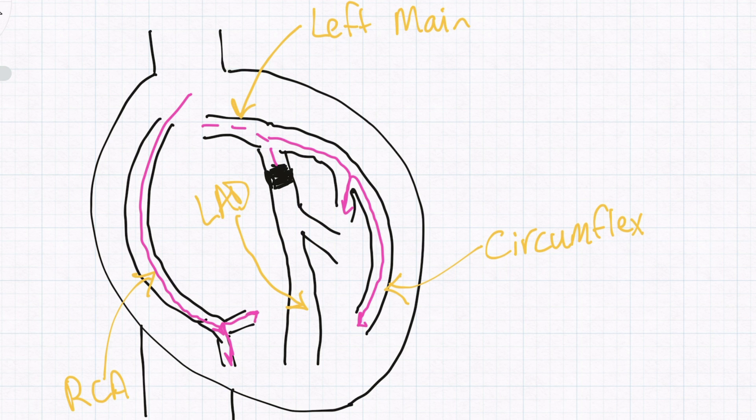In this diagram, you can see we've simulated a blockage of the LAD. If the flow of blood is represented by the pink line, you can see all the area of the heart that won't be getting adequate blood flow below that blockage.